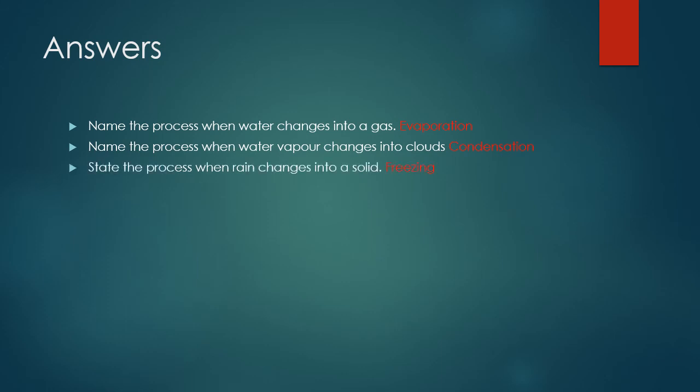State the process when rain changes into a solid. Remember, rain is a liquid. If we are changing the temperature of the liquid and making it very cold, for it to change into a solid it starts to freeze. So the process that happens is freezing.